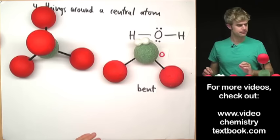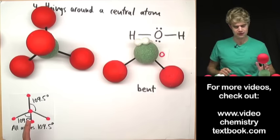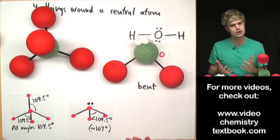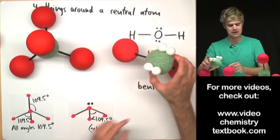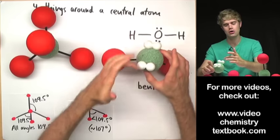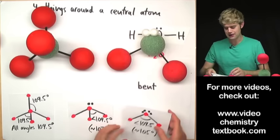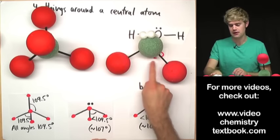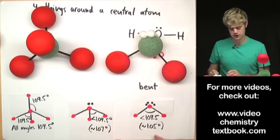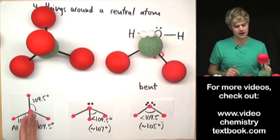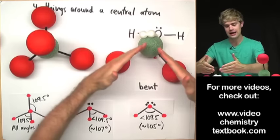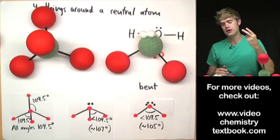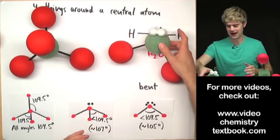What are the angles here? The tetrahedral had 109.5 degrees. In the trigonal pyramidal, one electron pair pushed the bonds a little bit closer together to about 107 degrees. Now in bent H₂O, instead of one unshared electron pair we have two lone electron pairs, and the combination of those two is going to push the atoms even a little bit closer. So in a bent molecule like water, the angle between them is going to be about 105 degrees — less than 107, which is less than 109.5. The more unshared electron pairs you add, the tighter the atoms get pushed together.